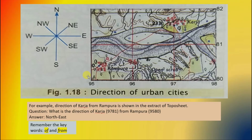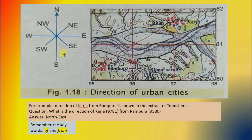We have one more thing to discuss — the direction of urban cities. For example, the direction of Karja from Rampura is shown in the extracted toposheet. Karja is here and Rampura is here. On the toposheet, map, or any plain paper, the pattern of directions is: top is north, bottom is south, right side is east, and left side is west. In between these main directions there are four more: north-east, north-west, south-east, and south-west.